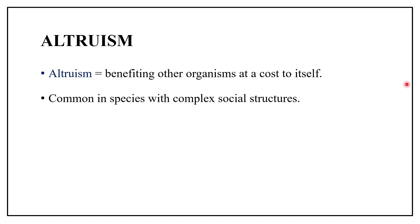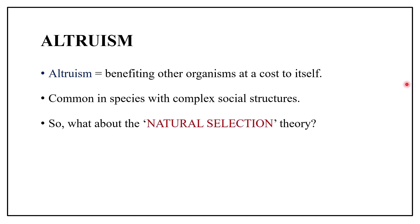This is the idea of altruism. But what about Darwin's natural selection theory? Darwin's viewpoint of natural selection leads us to expect animals to behave in ways that increase their own chances of survival and reproduction, not those of others. But by behaving altruistically, an animal actually reduces its own fitness. So what about the natural selection theory?